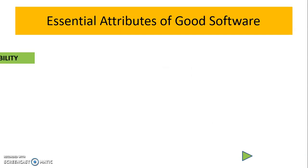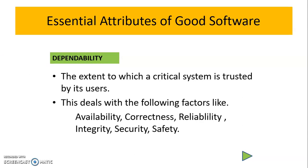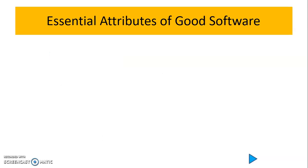The second essential attribute is dependability, which checks how much the system can be trusted by the user. It deals with factors like availability (how efficiently the software delivers its services), correctness (the extent to which the program satisfies its specifications), reliability (how the software performs according to its specifications), integrity (whether the software performs its intended functions), and security and safety.